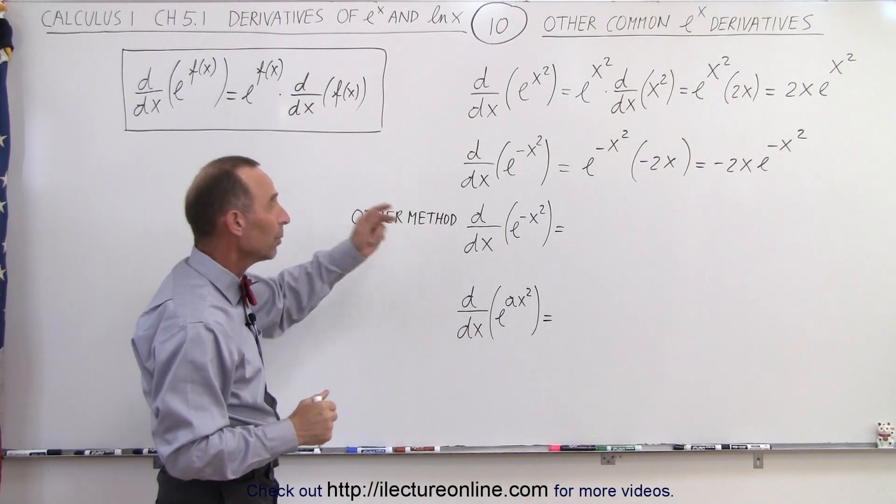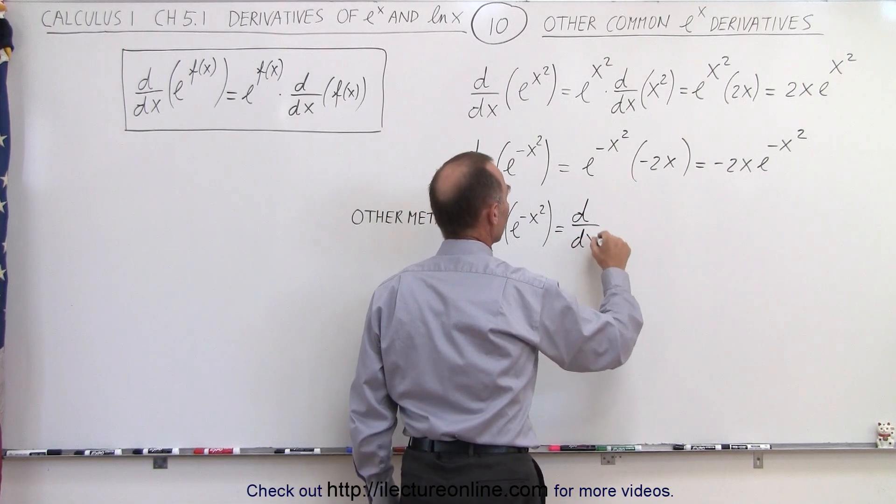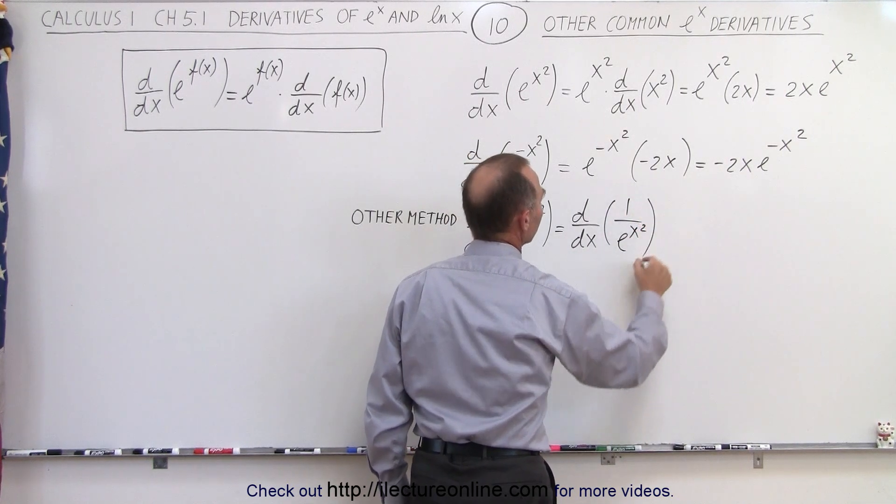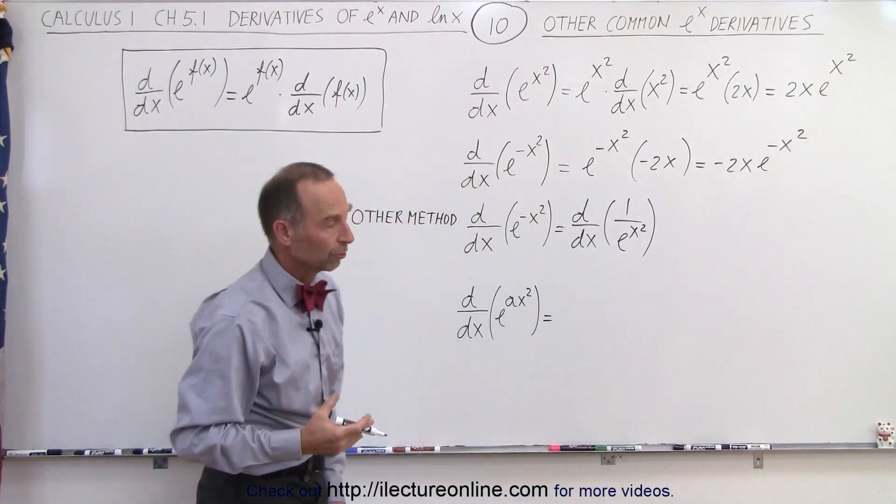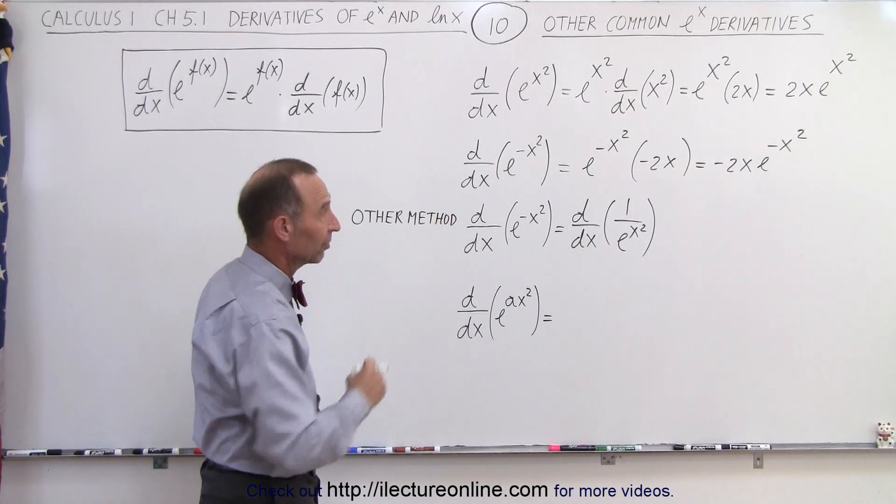Now we can do this in a different way. We can say this is the same as taking the derivative with respect to x of 1 over e to the x squared. Now we have a quotient. So let's go ahead and use the quotient rule to see if we end up with the same result.